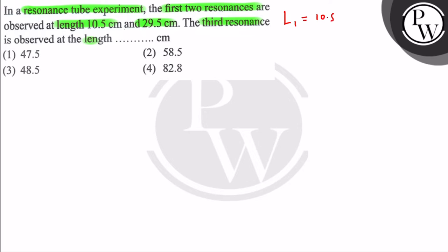10.5 cm and the second resonance is given 29.5 cm. Now our resonance tube concept is that the successive resonance is equal to λ/2. So here we go to L₂ - L₁ = λ/2.